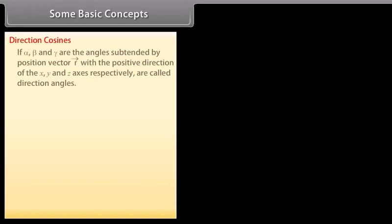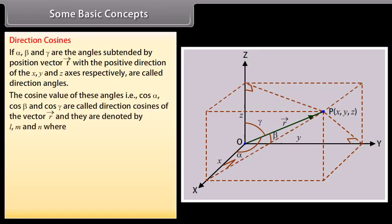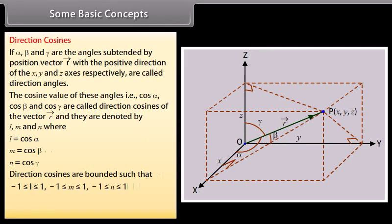Direction cosines: If alpha, beta, and gamma are the angles subtended by position vector R with the positive direction of X, Y, and Z axes respectively, they are called direction angles. The cosine values of these angles, that is cos alpha, cos beta, and cos gamma, are called direction cosines of vector R and are denoted by L, M, and N, where L = cos alpha, M = cos beta, N = cos gamma. Direction cosines are bounded such that -1 ≤ L ≤ 1, -1 ≤ M ≤ 1, -1 ≤ N ≤ 1, and they are connected by the formula L² + M² + N² = 1.